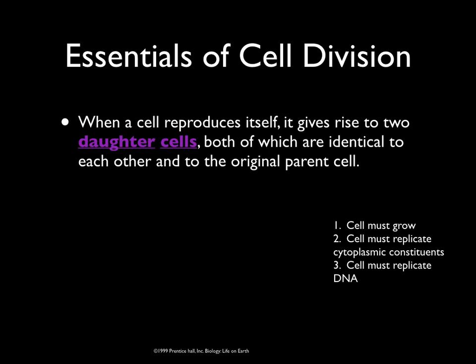If a cell didn't grow before it divided, each subsequent division would produce smaller and smaller cells until eventually there was nothing left. So before a cell can divide, it has to grow and get bigger. Cells must also replicate cytoplasmic constituents — meaning all of those organelles in the cell must also be copied before a cell divides.